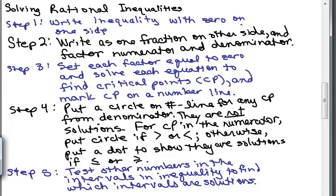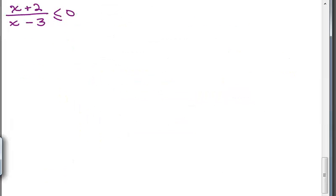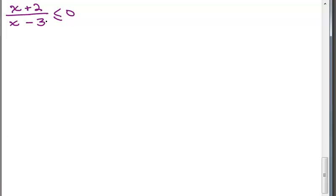Then we'll go ahead and test the intervals like we've done before. Here's the first problem: x plus 2 over x minus 3 is less than or equal to 0. Our first step was to make sure we have 0 on one side — and we have that. Second, make sure we have a single fraction on the other side — and we have that. Third, make sure we have the numerator and denominator factored — and we have that as well.